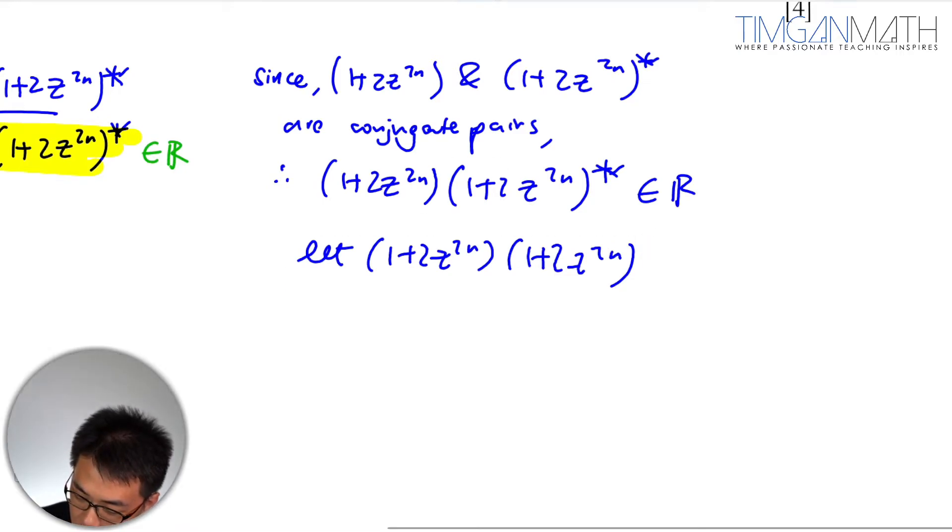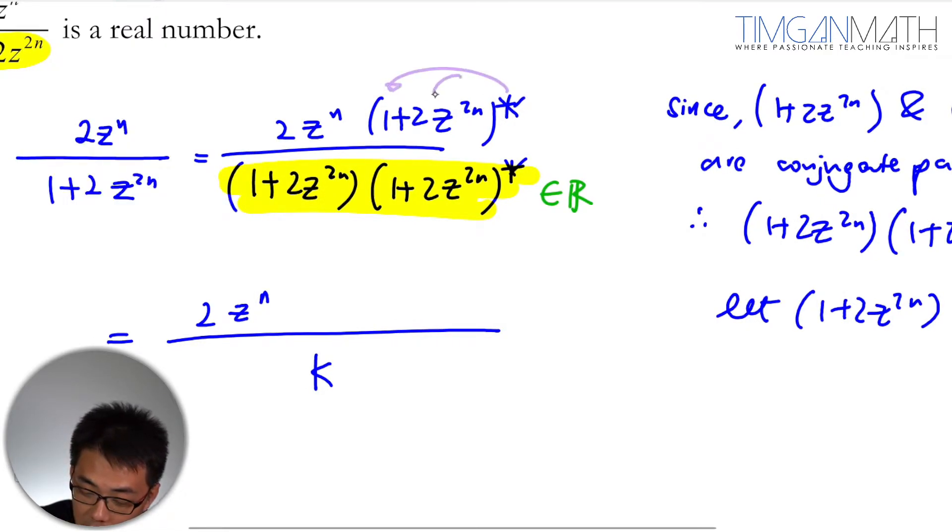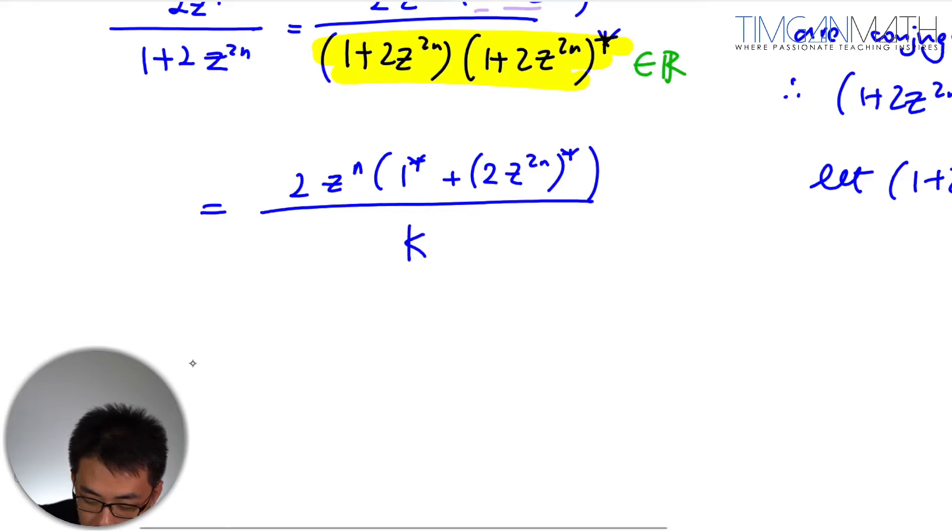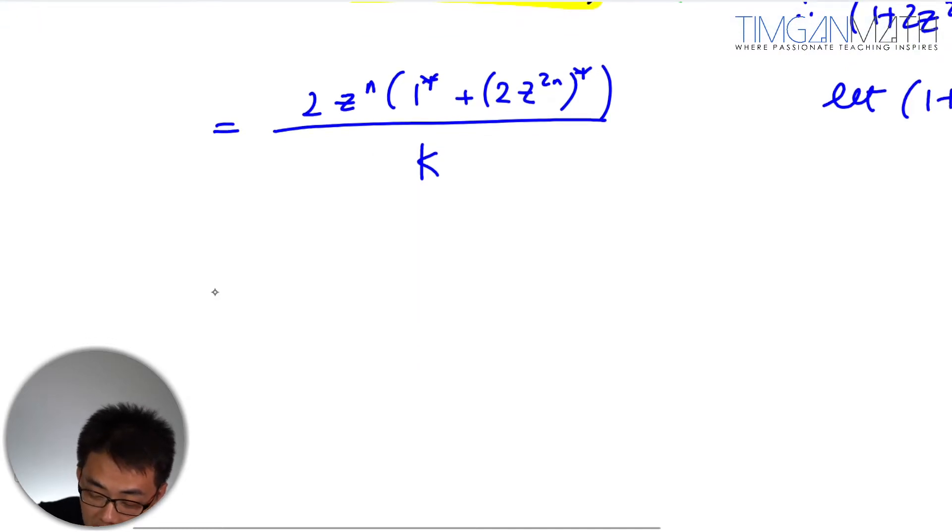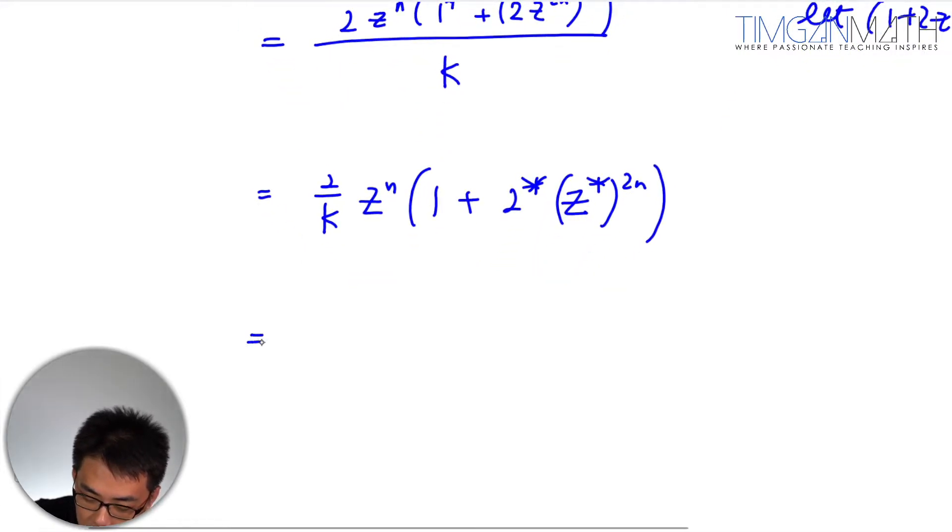This is real. So I can just simplify this as k. And this is 2z^n. Then just remember that the conjugate will just attach like a sticky note. So we just attach to every single one here. So conjugate z^(2n) conjugate. Conjugate 1 would definitely be 1. The real value when you conjugate it is just the value itself. So I'm going to rearrange this so that the 2 will be there. This is z^n and this would be 1 plus 2 conjugate z^(2n) conjugate. So this will be 2/k.